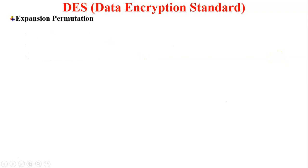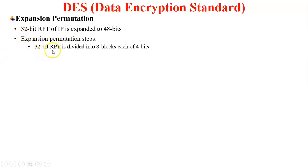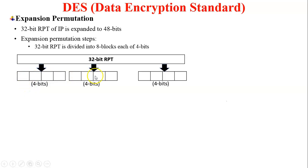Next is expansion permutation. The 32-bit RPT — right plain text from the initial permutation — is expanded to 48 bits, because our key size is 48 bits and we need to perform XOR after expansion permutation. The 32-bit RPT is divided into 8 blocks, each of 4 bits — 8 multiplied by 4 equals 32 bits total — generating 8 blocks. In the figure you can see 32 bits: block 1, block 2, up to block 8, with each block size being 4 bits.